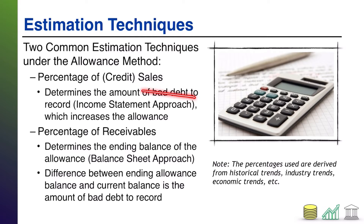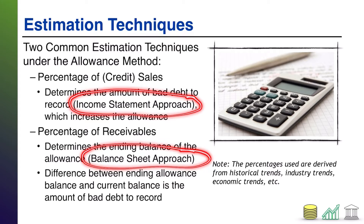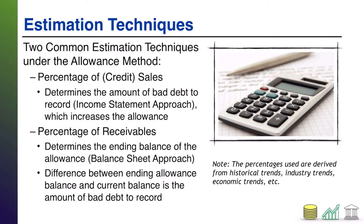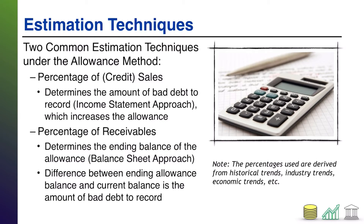In both of these approaches: for the first one it's an income statement approach, and for the second one it's a balance sheet approach. In the first, you're taking a percentage of revenue to figure out what expense to record. In the second, you're taking a percent of AR to figure out what contra asset you need to have, and then you record whatever's necessary to get there.